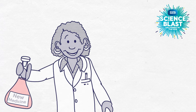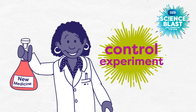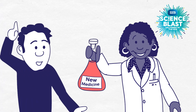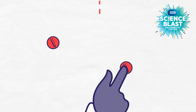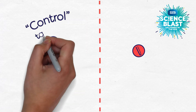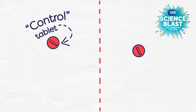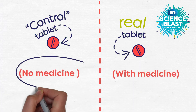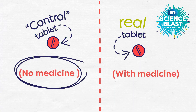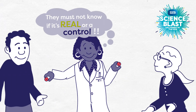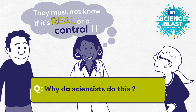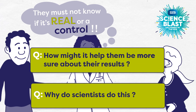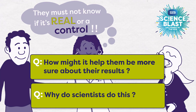Scientists testing new medicines use control experiments as often as they can. People usually volunteer to test new medicines and see if it makes them feel better. For example, if the medicine is in the form of a tablet, the researchers may give some of the volunteers a control tablet. This tablet looks the same, but it actually doesn't have any of the medicine in it at all. In a good experiment, the volunteers will not know if they have the real medicine or the control tablet. Why do you think scientists do this, and how might it help them be more sure of their results?